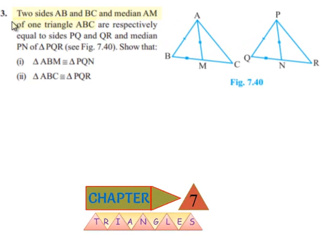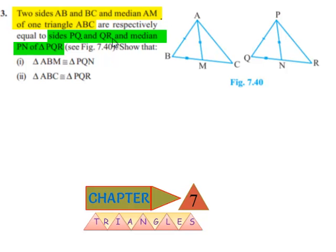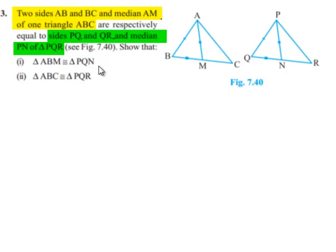Moving on to the third question. Two sides AB and BC and a median AM of triangle ABC are respectively equal to sides PQ and QR and median PN of triangle PQR. Show that triangle ABM is congruent to triangle PQN, and triangle ABC is congruent to triangle PQR.